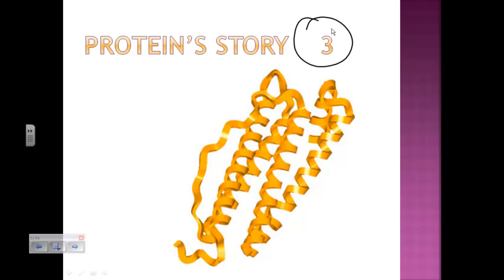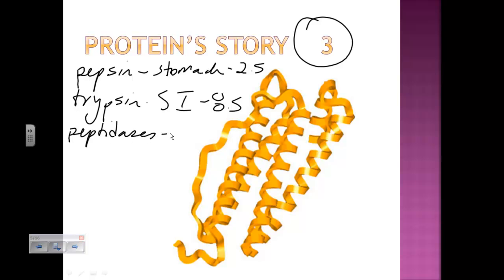Second macromolecule, protein, also has three enzymes in order. Pepsin is the enzyme that works in the stomach. We remember the stomach is the one and only acidic environment. The second one is trypsin in the small intestine, pH 8.5. And the last group of enzymes are going to be peptidases. They are also in the small intestine, pH of 8.5.